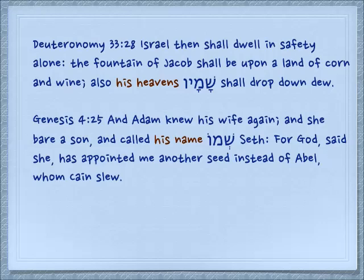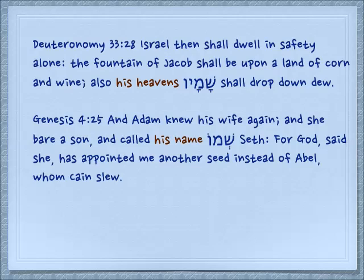Here is an example of the third person masculine singular — his. Deuteronomy 33:28: Israel then shall dwell in safety alone. The fountain of Jacob shall be upon the land of corn and wine, and his heavens — shamav — shall drop down dew. So when we have a plural noun with the personal possessive pronoun for his, we add a vav, but the vav follows the yud because the noun is plural. In Genesis 4:25: And Adam knew his wife again, and she bare a son, and called his name Seth. This is shemoh — shem — and then we get the O that you might expect for his, because the noun is singular.